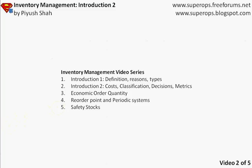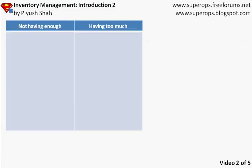The first thing we're going to discuss is inventory cost. At this point, there are two kinds of cost: one is the cost of not having enough inventory, and the second is the cost of having too much inventory. So there are only two categories.